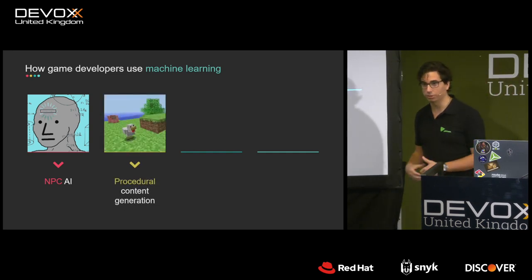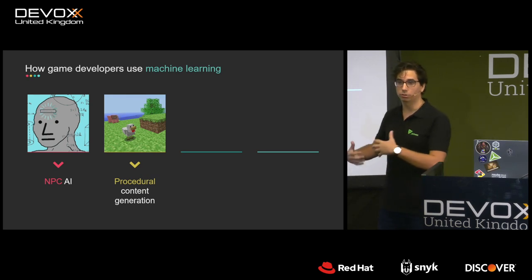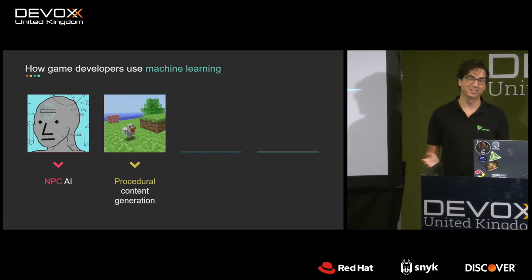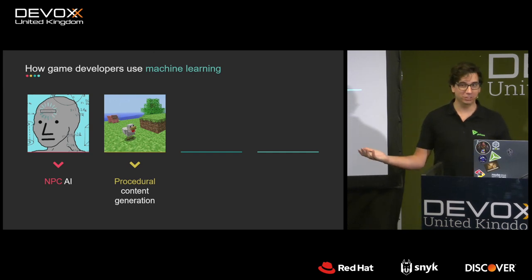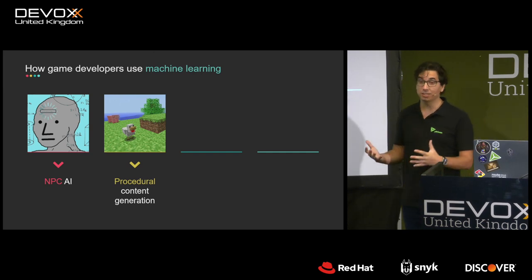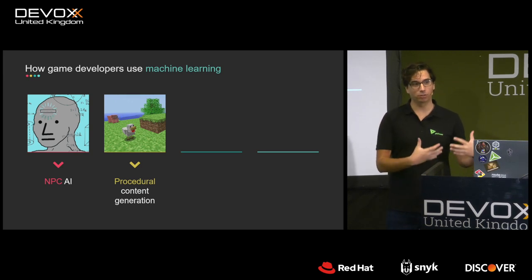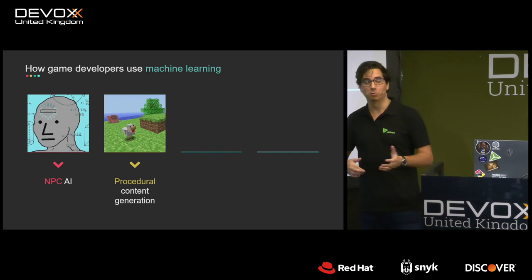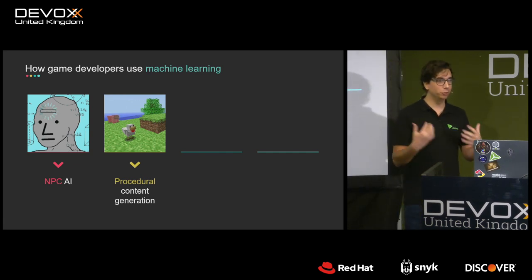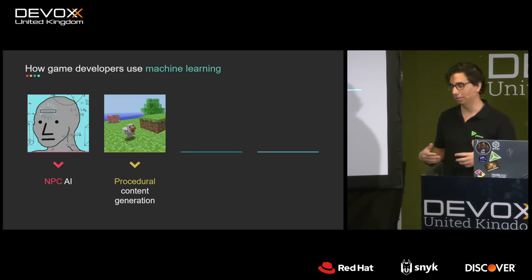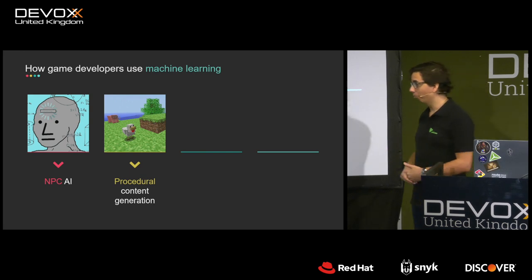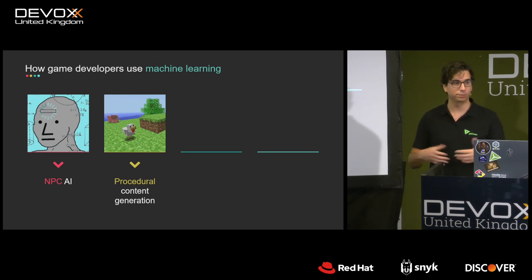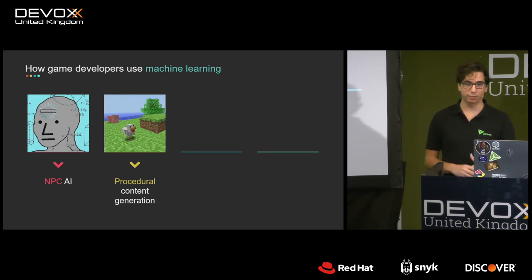The second use case is procedural content generation, which also includes adaptive difficulty. Minecraft is a procedurally generated world, but if the seed of the random generation algorithm is poor, you get a poor world — which can deter new players. With a machine learning algorithm, you can train your procedurally generated worlds to always fit within certain quality criteria.